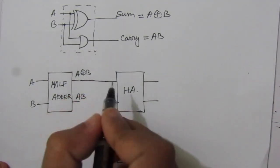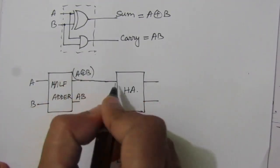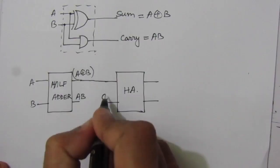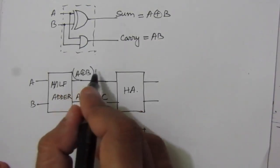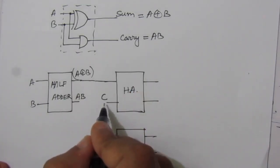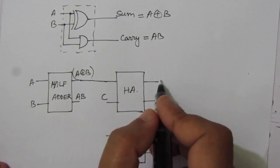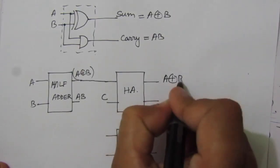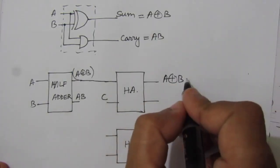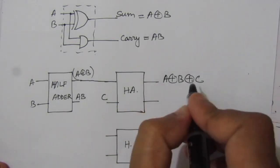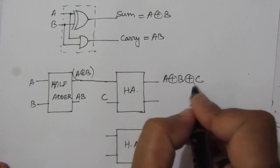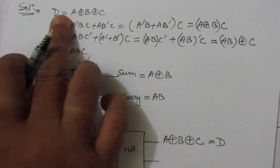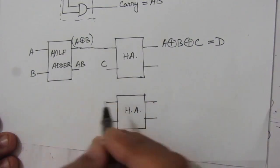Now let us connect them. The sum output A XOR B from the first half adder is connected as one input to the second half adder. We give C as the other input to the second half adder. So at the sum output of the second half adder, we get A XOR B XOR C, which is nothing but function D.